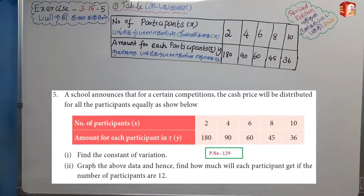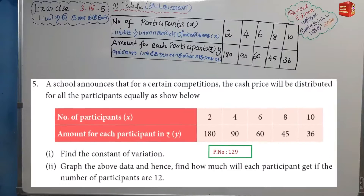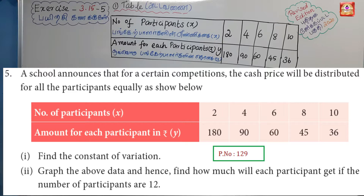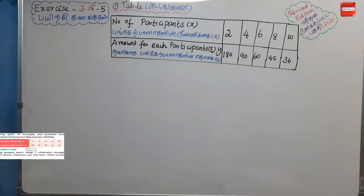Exercise 3.15, problem number 5. A school announces that for a certain competition, the cash prize will be distributed for all the participants equally, as shown below. The number of participants and amount for each participant is given in the table. First option: find the constant of variation. Second option: graph the above data and hence find how much will each participant get if the number of participants are 12.